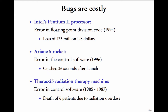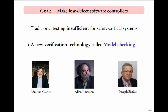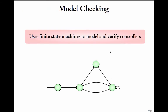Clearly errors do occur and errors do go unnoticed. The goal is to make software controllers with as low a defect rate as possible. Traditional testing is insufficient for safety critical systems. This has led to a new verification technology called model checking. Clarke, Emerson, and Sifakis have been the pioneers of this model checking approach. Traditional testing involves giving a lot of test cases to the code and checking if the code is correct on these test cases.